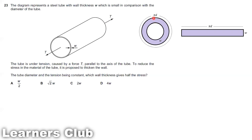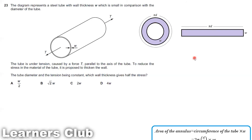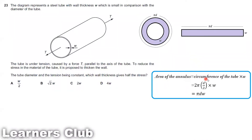Taking this annulus region — if we cut it open, we can open it into a rectangular shape. The area of the annulus is the circumference of the tube multiplied by W. The circumference is 2πr, or π times the diameter d, since 2r equals d. So if we cut it open, the length is πd and the thickness is W, giving area = πdW.